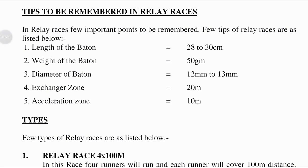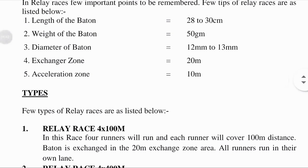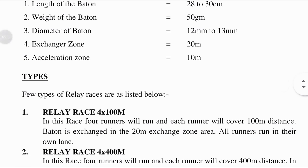Few tips of relay races are listed below. First, the length of the baton: the baton is a short stick or tube passed from one runner to another in a relay race, and its length is equal to 28 to 30 centimeters. The weight of the baton means a body's relative mass of that short stick or tube, equal to 50 grams.